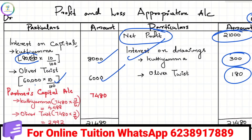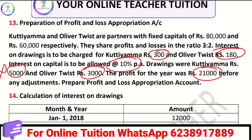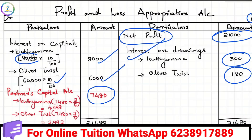We already have 21,000 profit. The normal balance difference is 7,480. That is divided in the ratio of 3 to 2. We divide 7,480 into 3 by 5, which gives 4,488. Then 7,480 into 2 by 5, which gives 2,992. These go to the partners' capital — the two capital accounts.